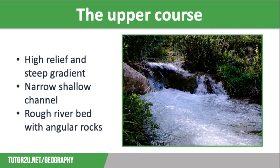Let's think about how the characteristics of the river change as you move downstream, starting with the upper course. In the upper course there is a high relief and steep gradient meaning lots of potential energy, despite having low velocity and small discharge. There is a narrow shallow channel where trickles merge to form rivulets which coalesce to create a single channel or stream.